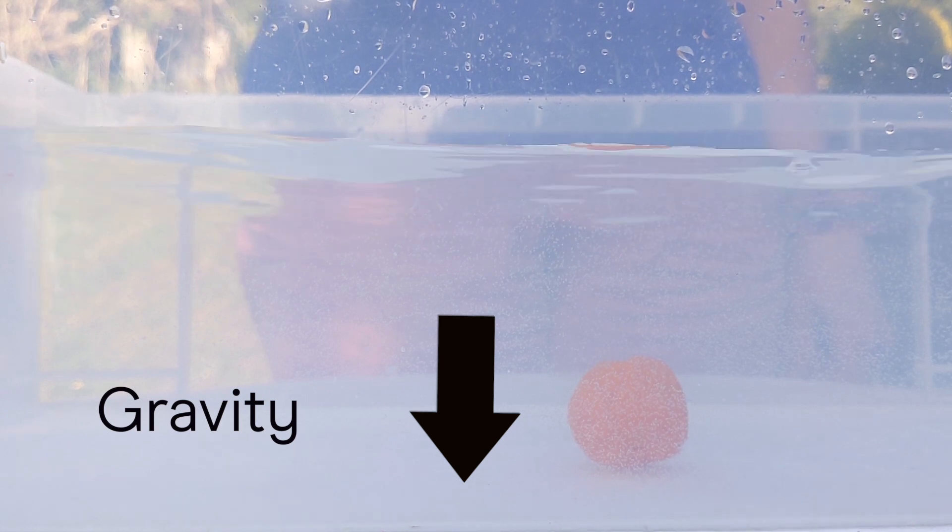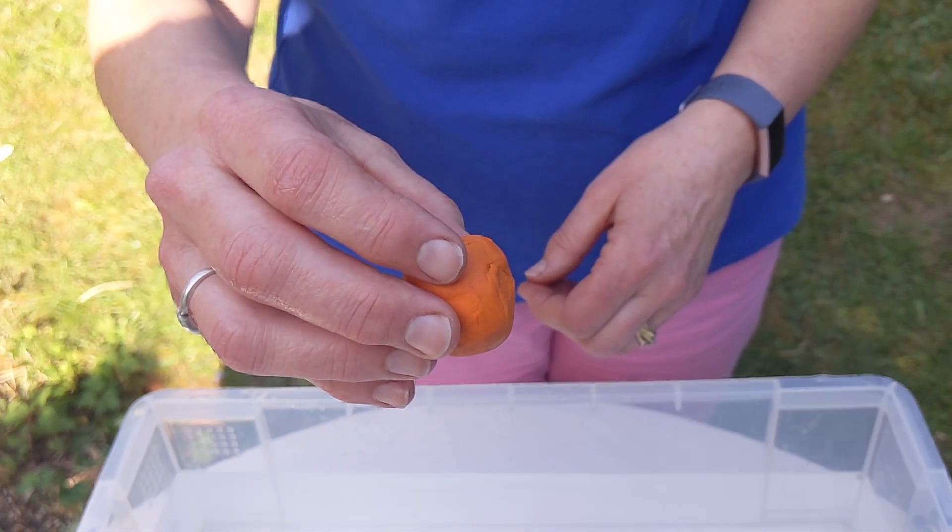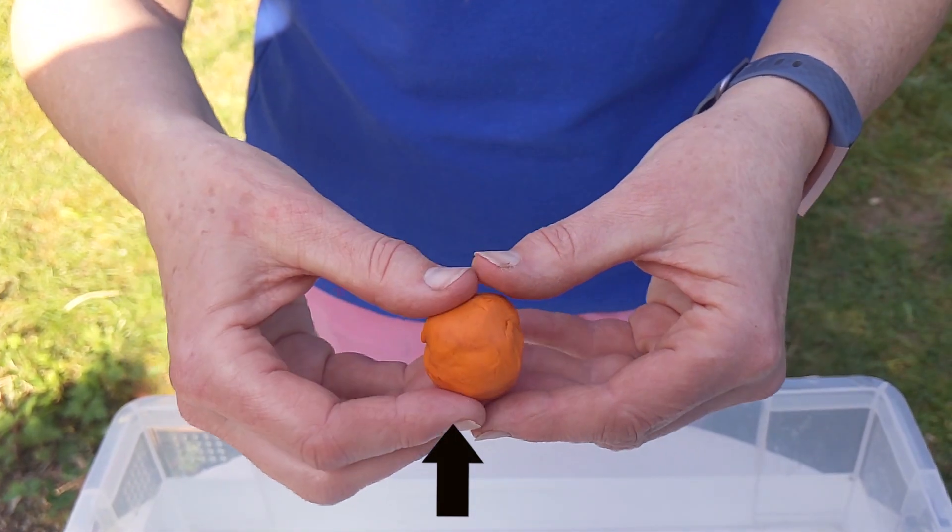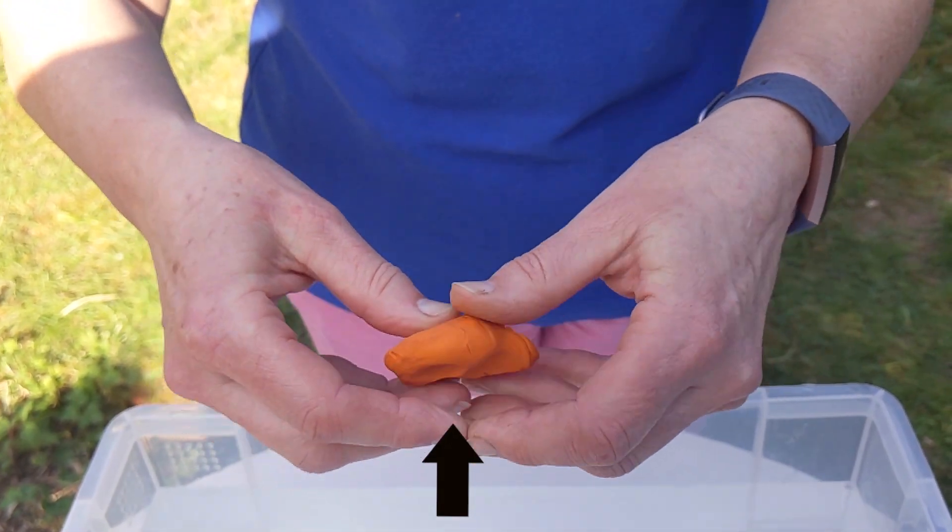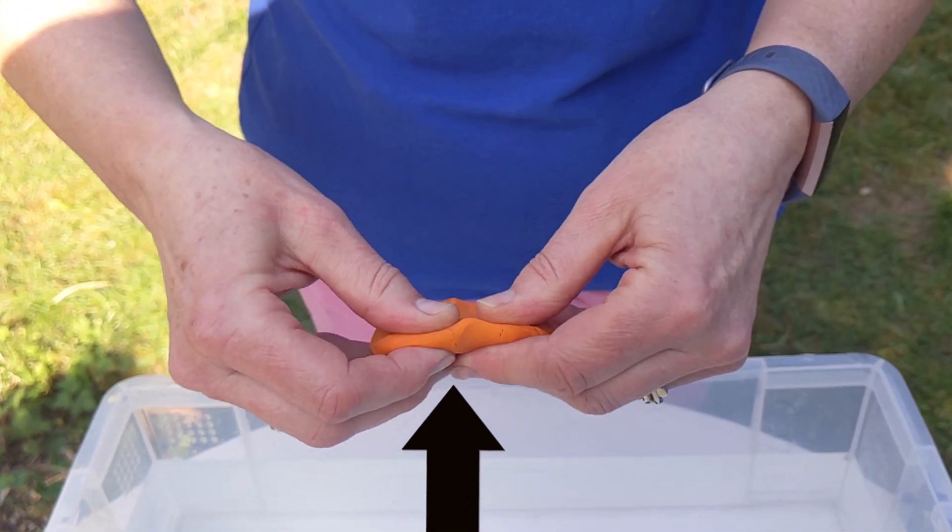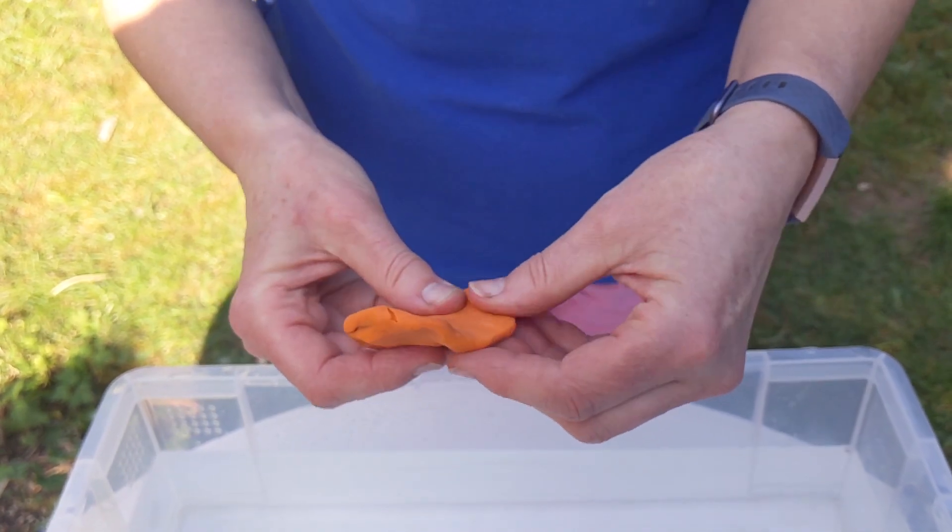So what can we do to the ball to increase the upthrust pushing it up in the water? At the moment upthrust is only pushing against this tiny area. If we increase the area that upthrust can push against we can increase the chances of our plasticine floating. Make a big flat shape like this.